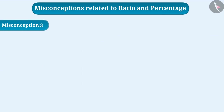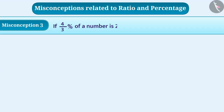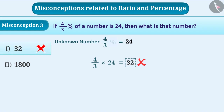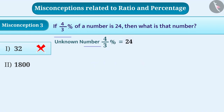Misconception 3: If 4/3 percent of a number is 24, then what is that number? To find the unknown number, some children ignore the percent sign and multiply 4/3 with 24, getting 32 — but this is wrong, so option 1 is incorrect. This mistake happens because of not understanding the question properly. Here we have to find the number whose 4/3 percent is 24. Suppose the unknown number is X; then 4/3 percent of X equals 24.